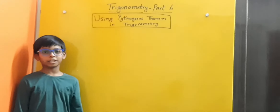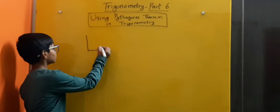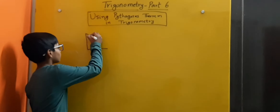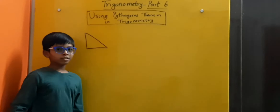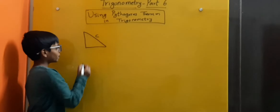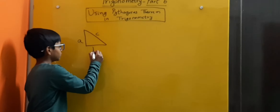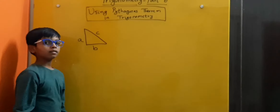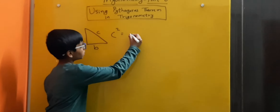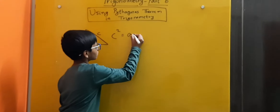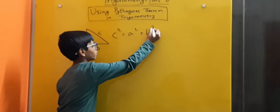The Pythagoras theorem states that in a right angle triangle, if C is the hypotenuse and A and B are its legs, then C squared is equal to A squared plus B squared.